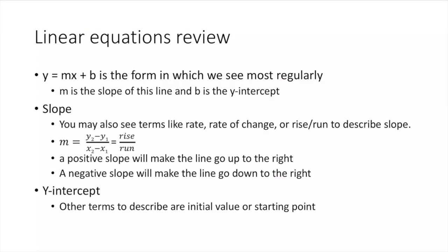A quick review: y = mx + b is the form that we see most lines in, where m is the slope and b is the y-intercept. For slope, they might also use terms like rate, rate of change, or rise over run — these all describe slope.